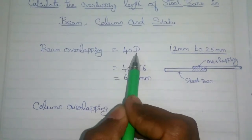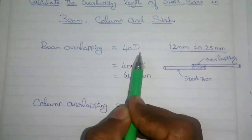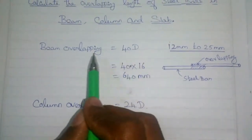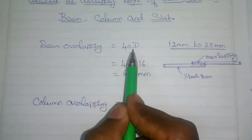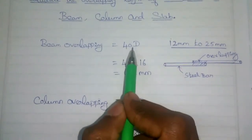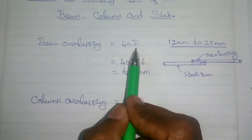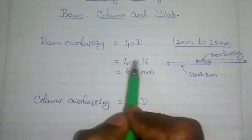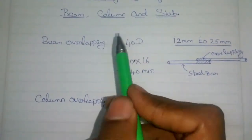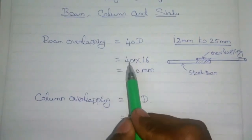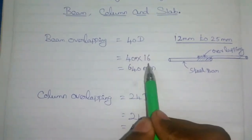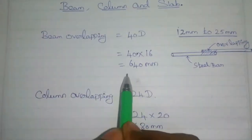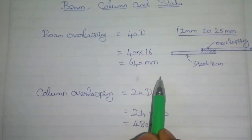When you use 40d, we have to multiply the overlap length of the steel bar. We will use the load condition with a 16mm diameter bar. So 40 x 16mm gives 640mm. So the beam overlapping length is 640mm.